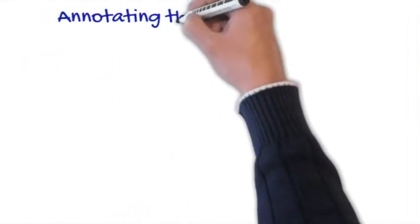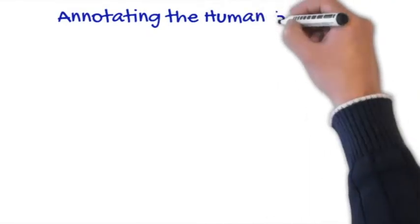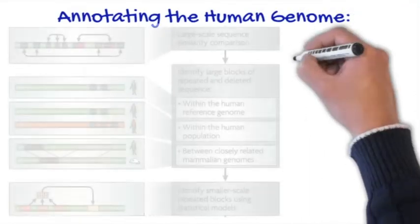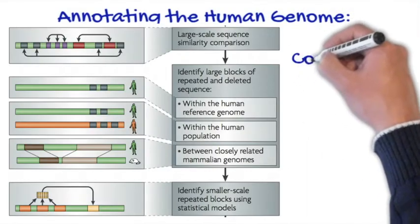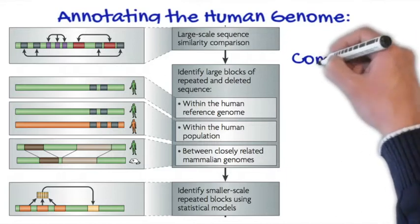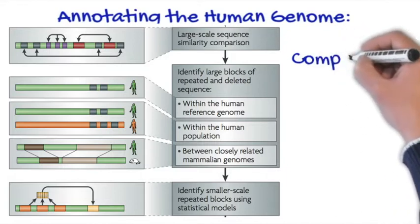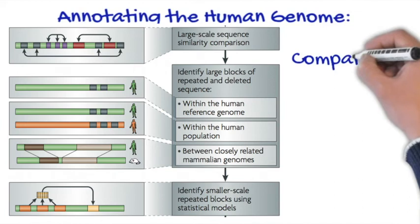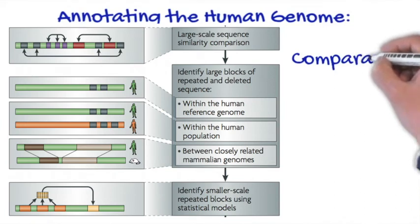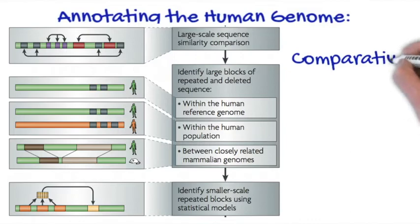Another way we can annotate the genome is comparative analysis, comparing the human genome to that of related organisms, such as the mouse or apes, or even one human to another, looking for conserved blocks. We can either look for conserved blocks within the genome, finding duplicated genes and pseudogenes and looking at the history of the genome.